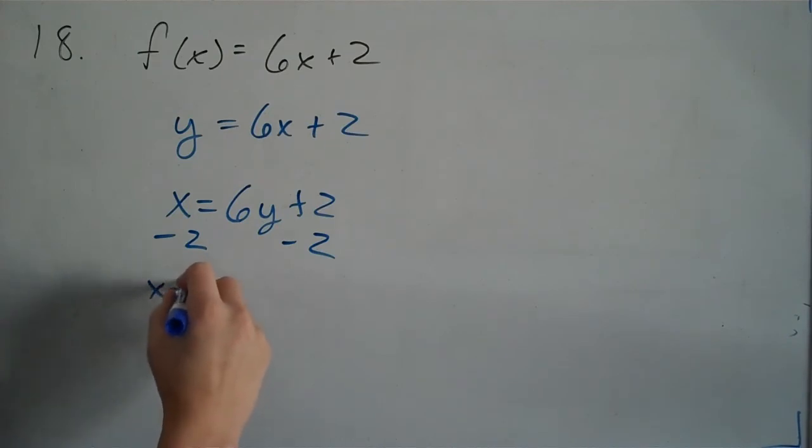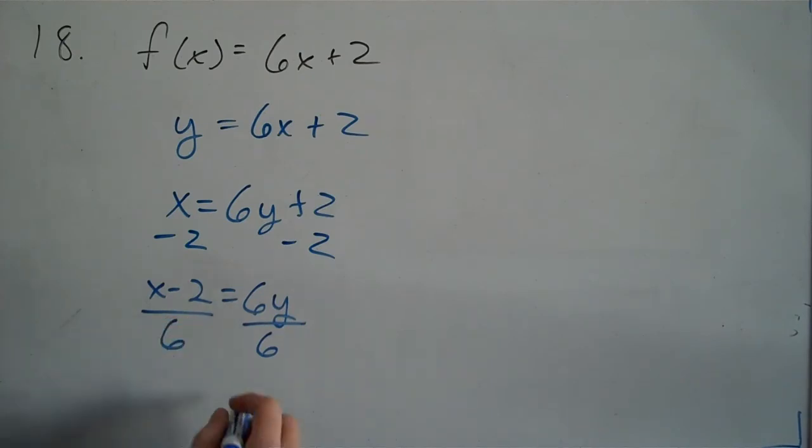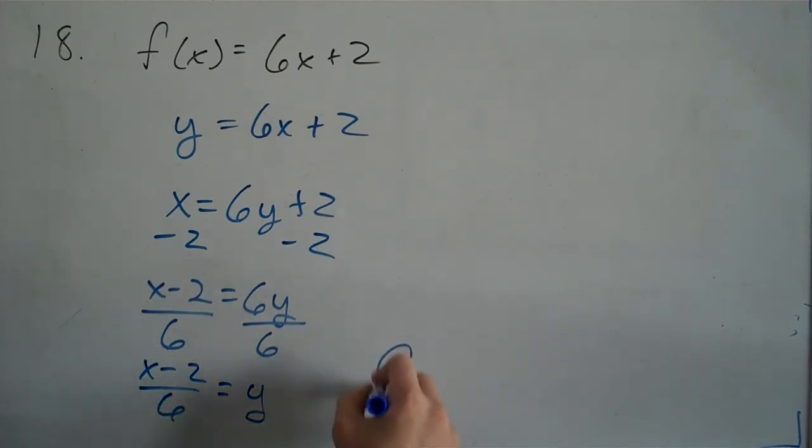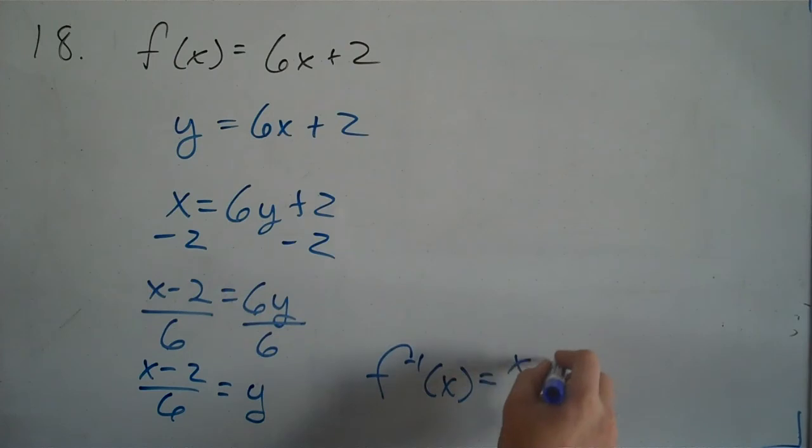so I have x minus 2 equals 6y, and divide it by 6. Then I have y equals x minus 2 divided by 6. For inverse notation, f inverse of x equals x minus 2 divided by 6.